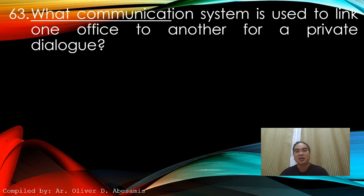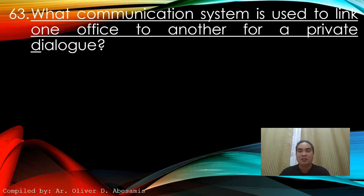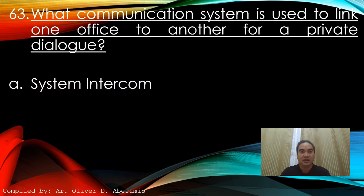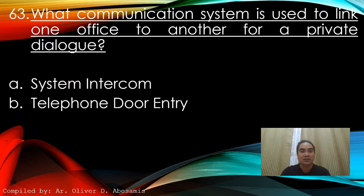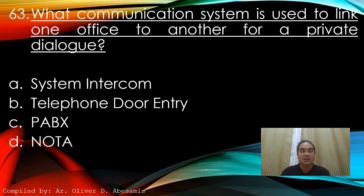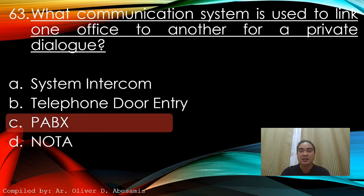What communication system is used to link one office to another for a private dialogue? A. System intercom. B. Telephone door entry. C. PABX. D. None of the above. Answer: C. PABX.